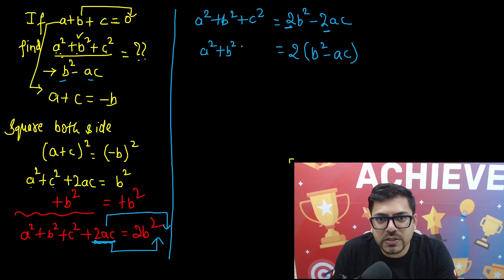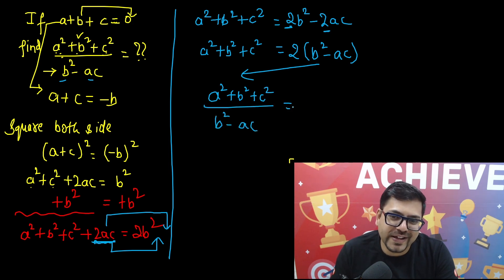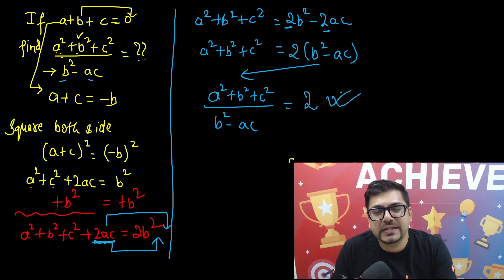And what remains here? That is a square plus b square plus c square. Now you can send this b square minus ac to the denominator and hence a square plus b square plus c square divided by b square minus ac, and very easily the answer is 2. So we have got the answer, the answer is 2.